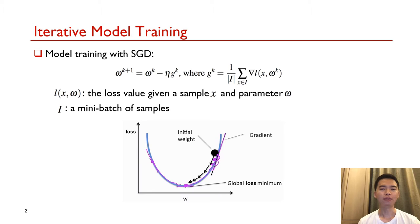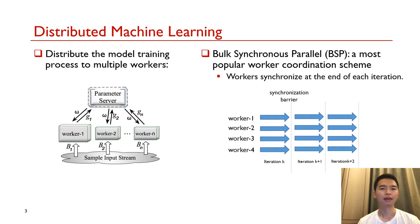Given a machine learning model, the objective of the model training process is to minimize the loss function of the whole training dataset. One typical training algorithm for that is SGD, which iteratively refines the model parameters with the gradient calculated from a sample batch. Nowadays, machine learning models are often trained in a distributed manner. Within each iteration, workers will calculate a local gradient and refine the global model remotely. As for the coordination among different workers, BSP is the most popular one. Its basic idea is to have workers synchronize at the end of each iteration.